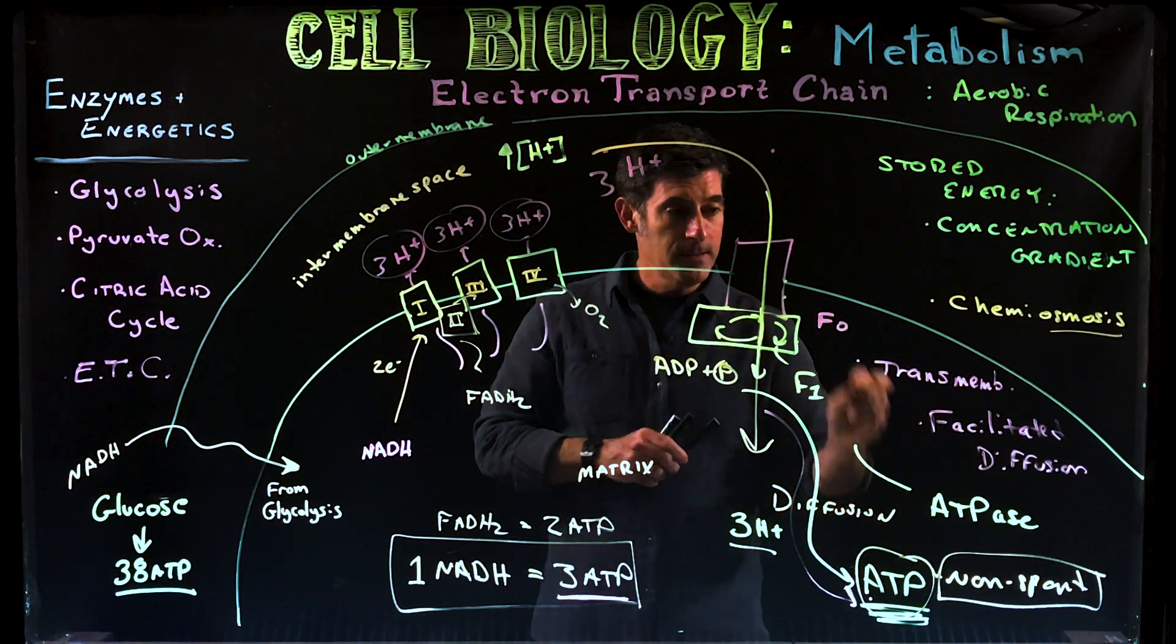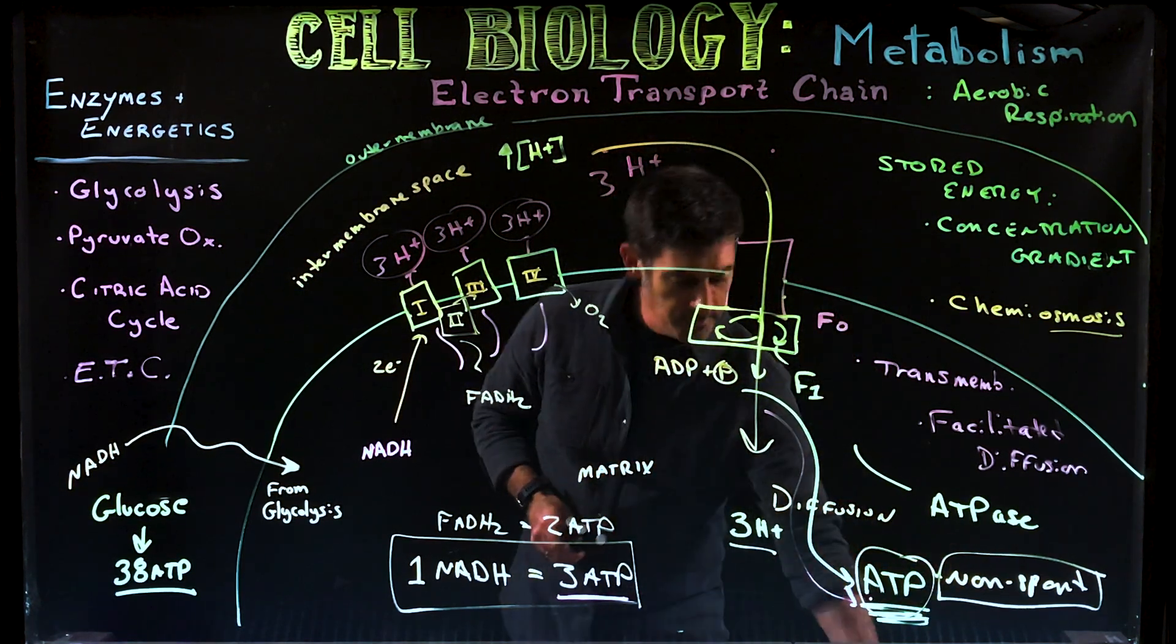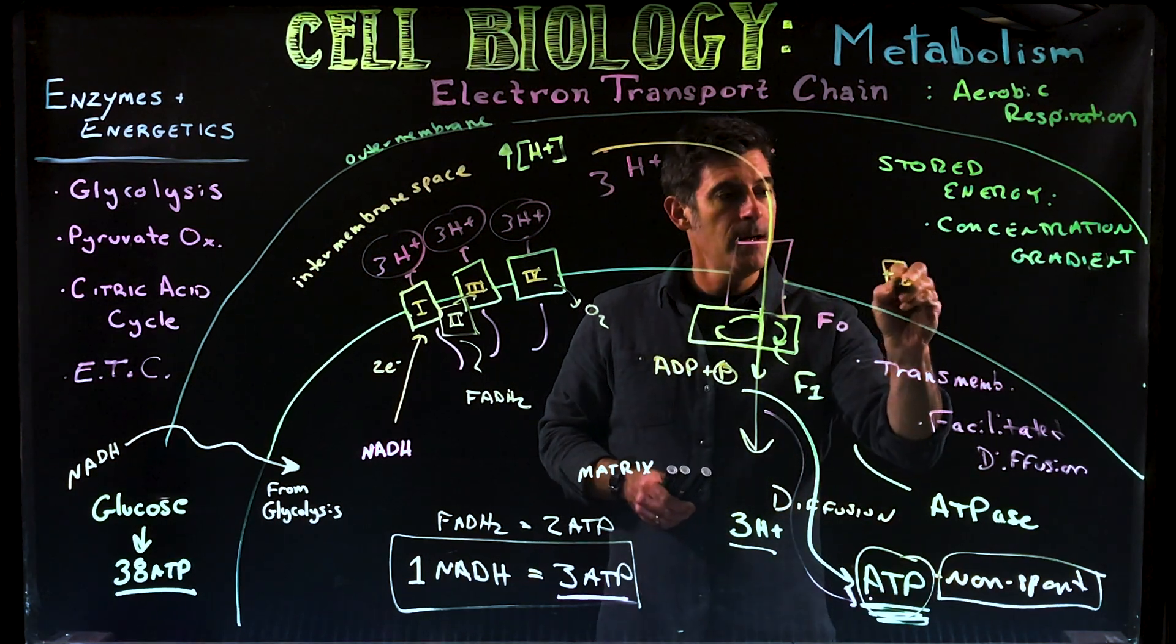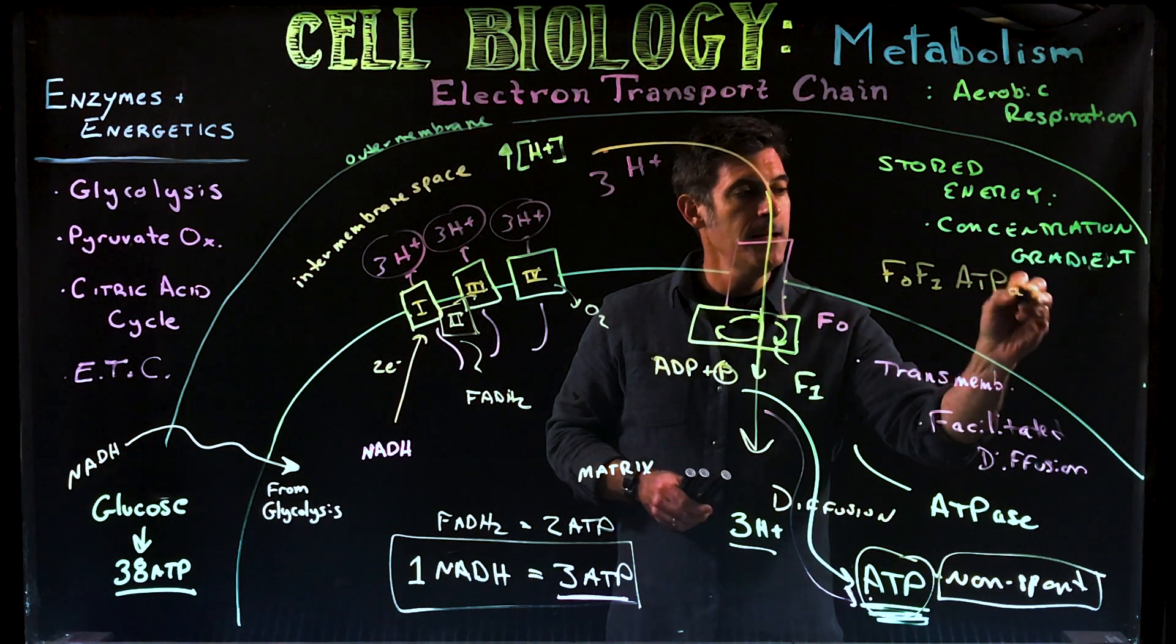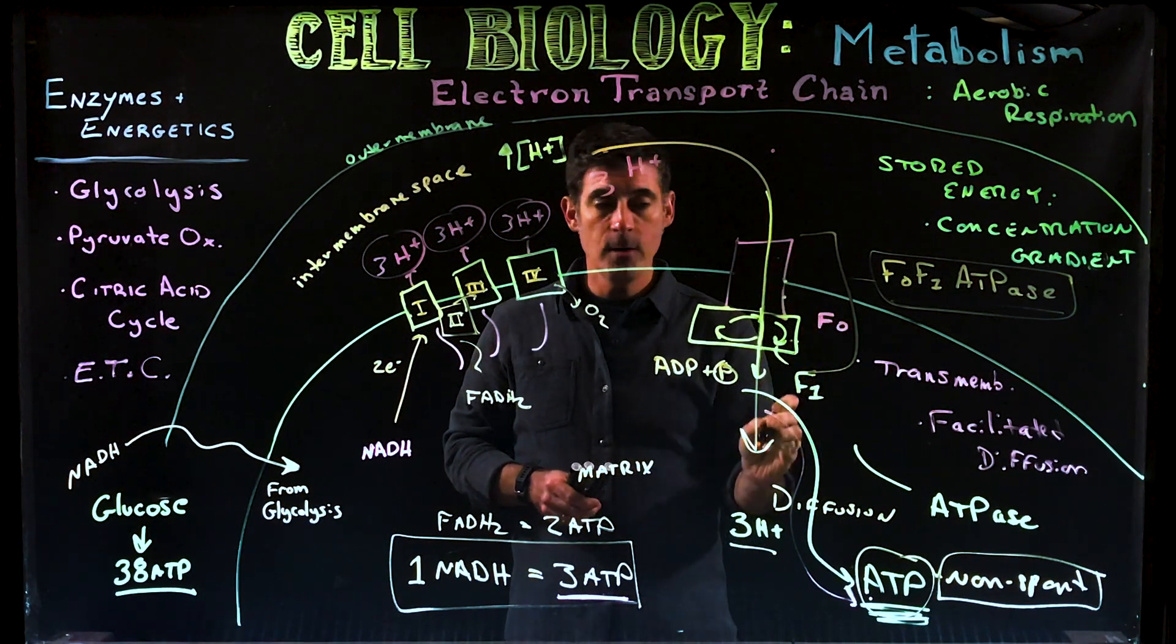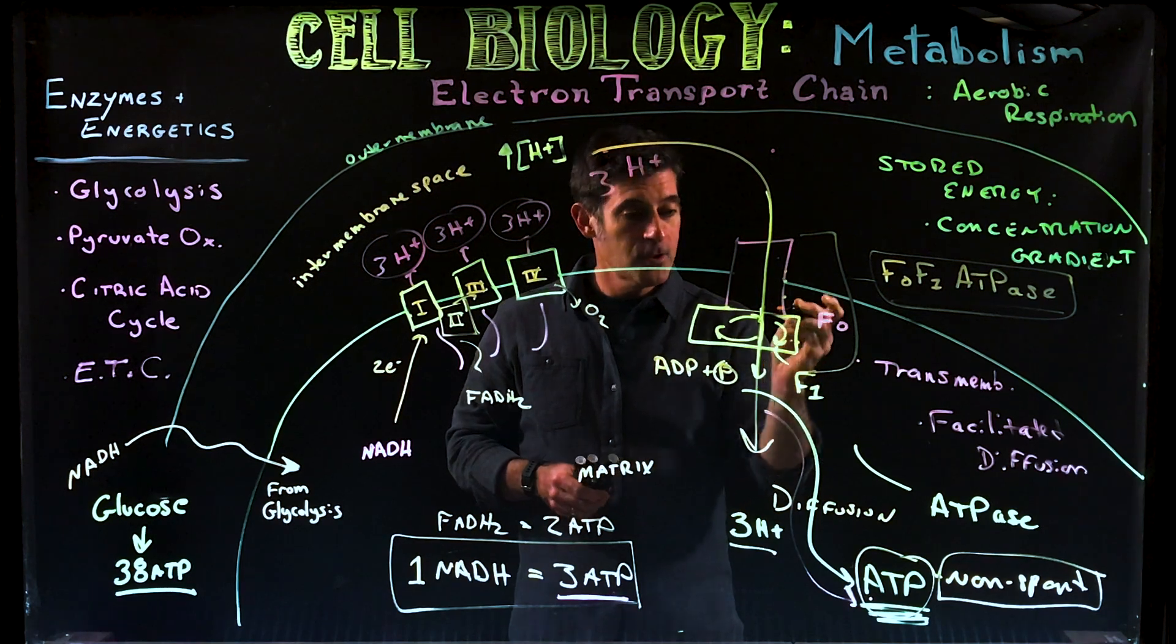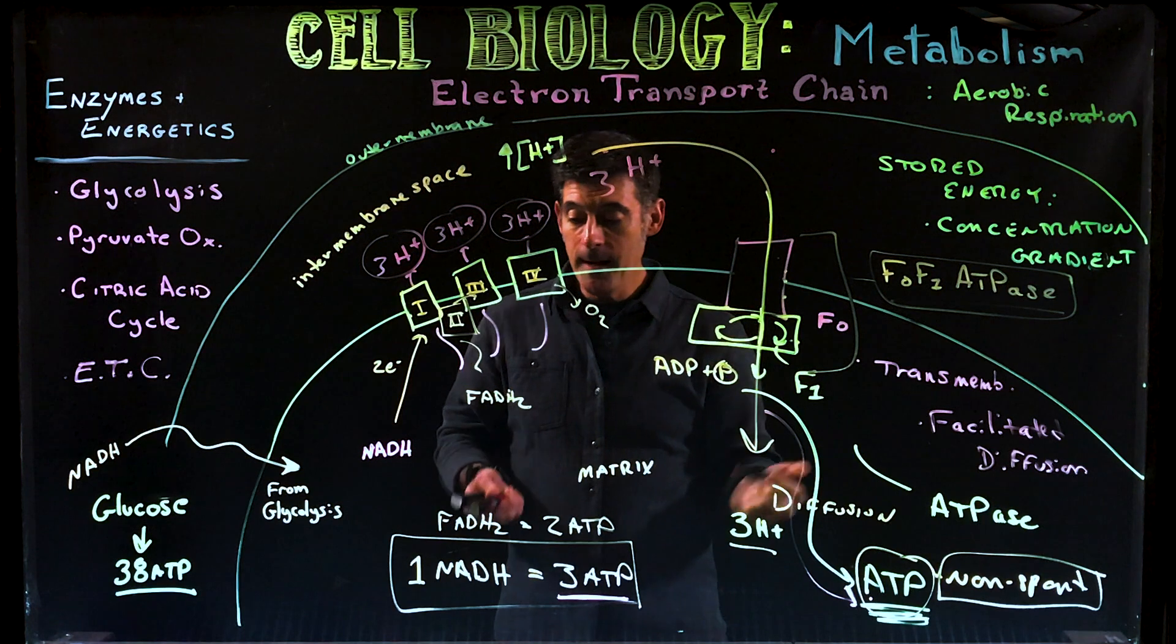But this right here, this is what we call the F0F1 ATPase. This is what we're talking about. It's a combination of these two proteins, a transmembrane protein and a peripheral protein. It's extremely important because this is really where all the ATP are made.